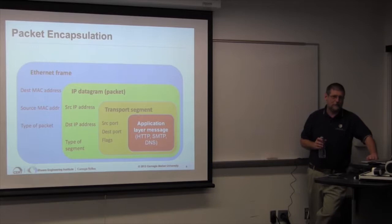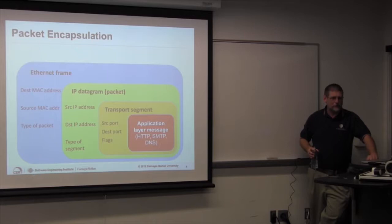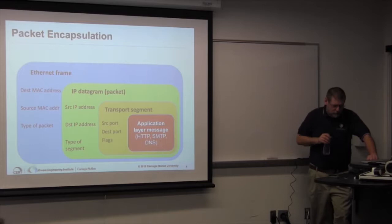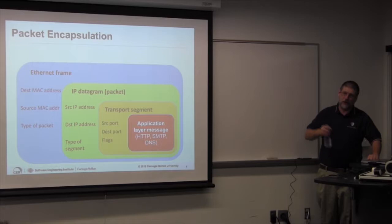To contrast with Bro and Argus: Bro will go all the way up to layer 7 and extract layer 7 information. Argus is really all about everything from layer 2 up. Those are the other tools we've been talking about this week.